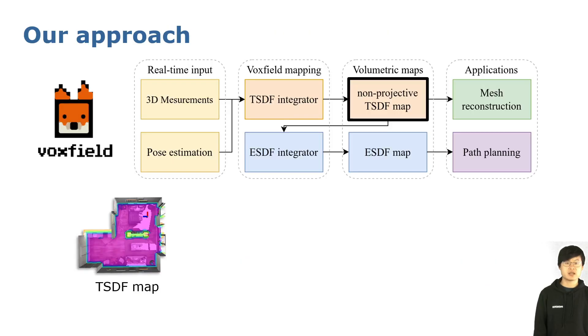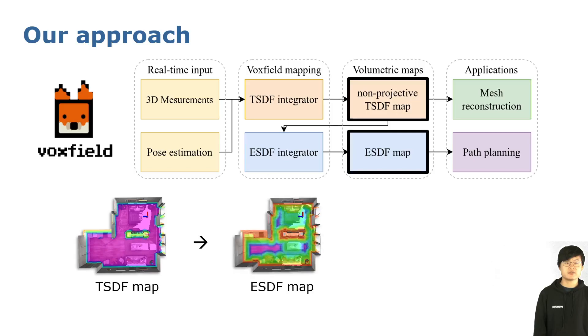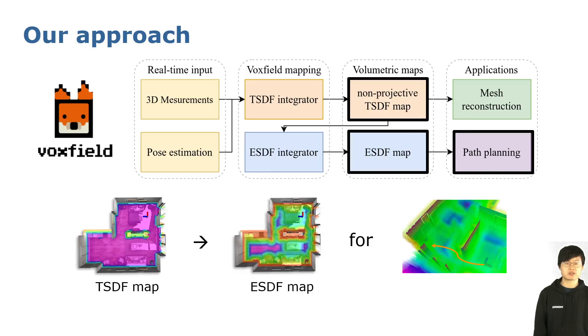Once we get the accurate TSDF, an ESDF map for path planning can be built through a graph-search-based value propagation.